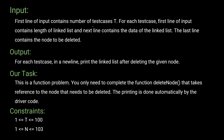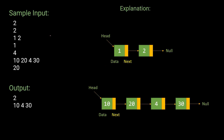The input format: the first line contains the number of test cases T. For each test case, the first line contains the length of the linked list, the next line contains the data, and the last line contains the node to be deleted. The output should be the linked list printed after deleting the given node. This is a function problem, so we only need to complete the function 'deleteNode' — the rest is handled by the driver code. Here are the constraints for this question.